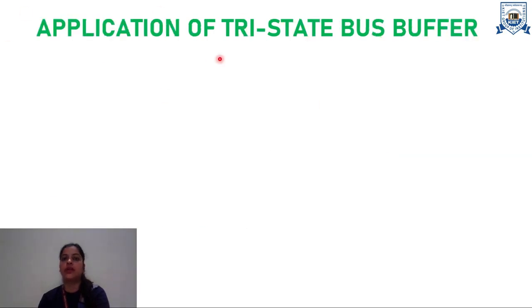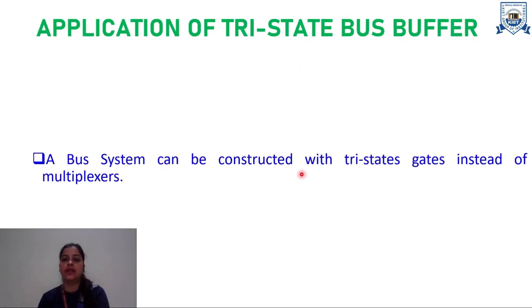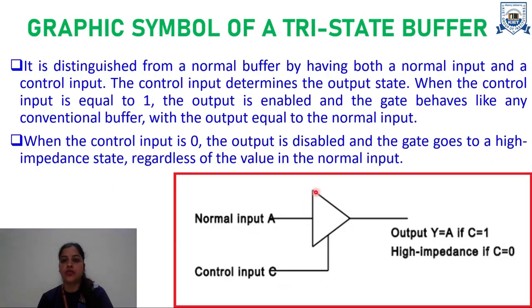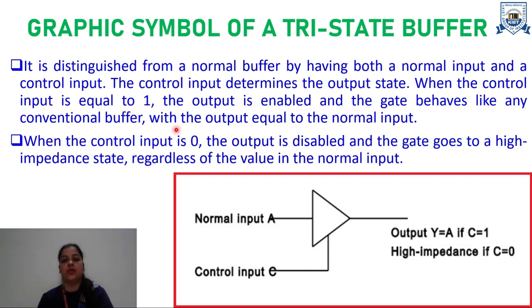A bus system can be constructed with tri-state gates instead of multiplexers. This is the graphical symbol of a tri-state buffer. Tri-state buffer is distinguished from the normal buffer by having both a normal input and the control input. The control input determines the output state. When the control input is equal to 1, then the output is enabled and the gate behaves like any conventional buffer, with the output equal to the normal input. When this control input is 0, then the output is disabled and the gate goes to the high-impedance state.